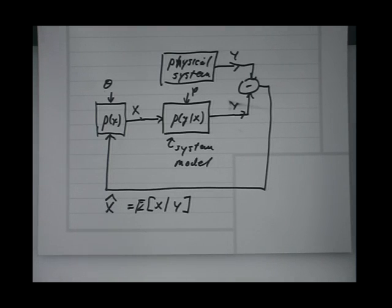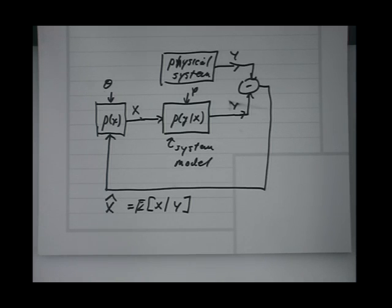I remember distinctly thinking, being the kind of person I am, that the first thing I was going to do is go out and find something that wasn't Gaussian, so that I could do something interesting with it. And now almost everything interesting is done with things that are non-Gaussian.